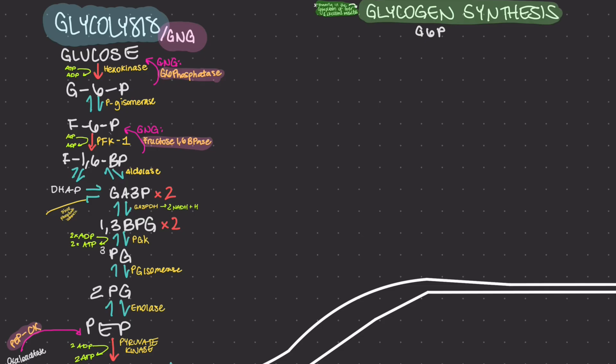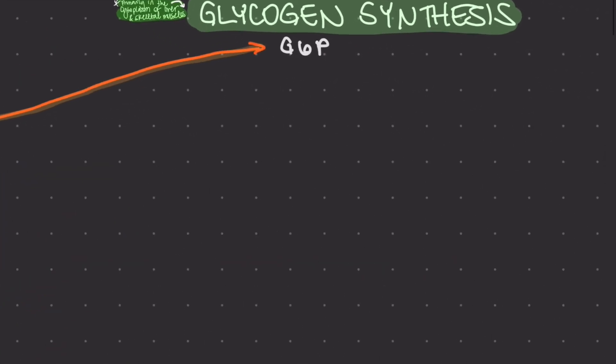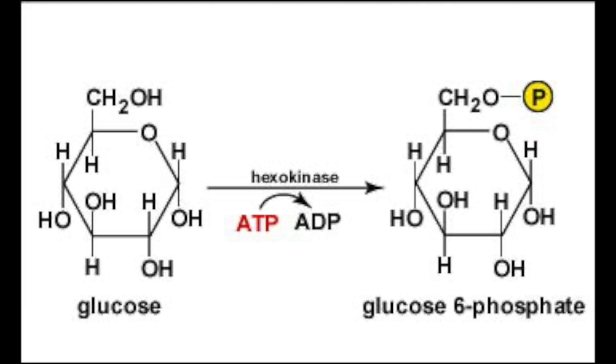We will start this process with a molecule of glucose-6-phosphate. I wonder where we get that from? If you remember from last Friday, glucose-6-phosphate comes straight from glycolysis after glucose is phosphorylated into glucose-6-phosphate.